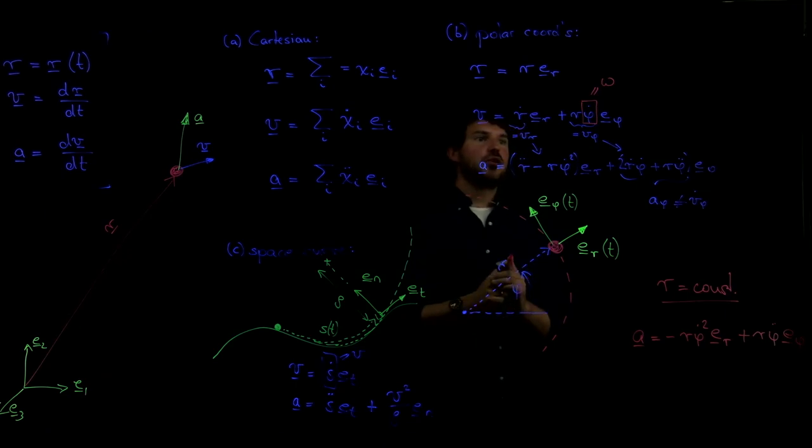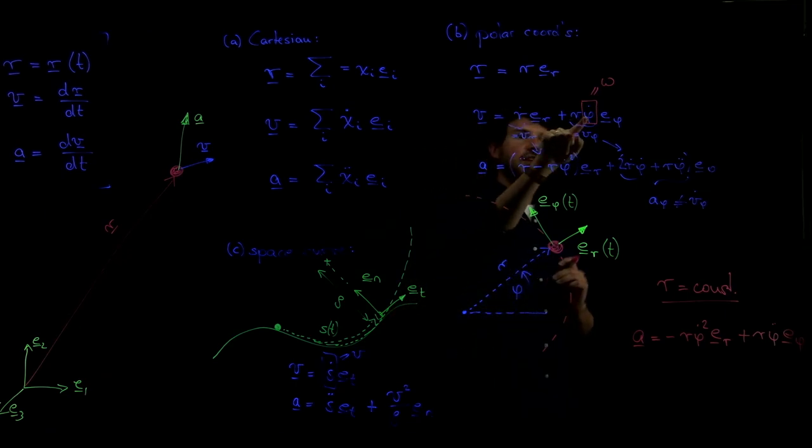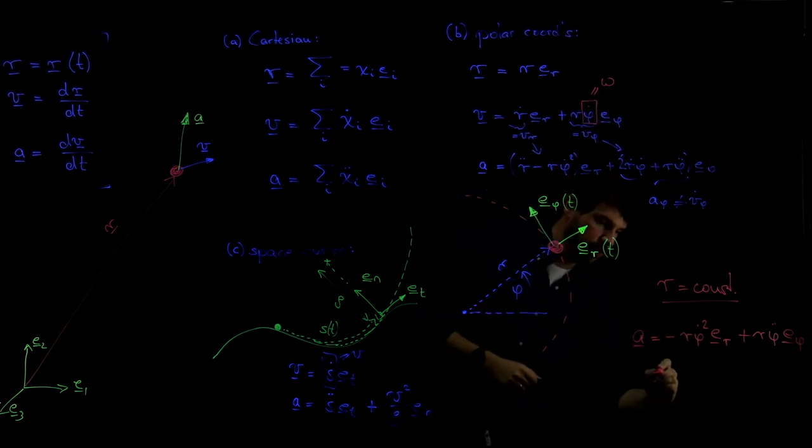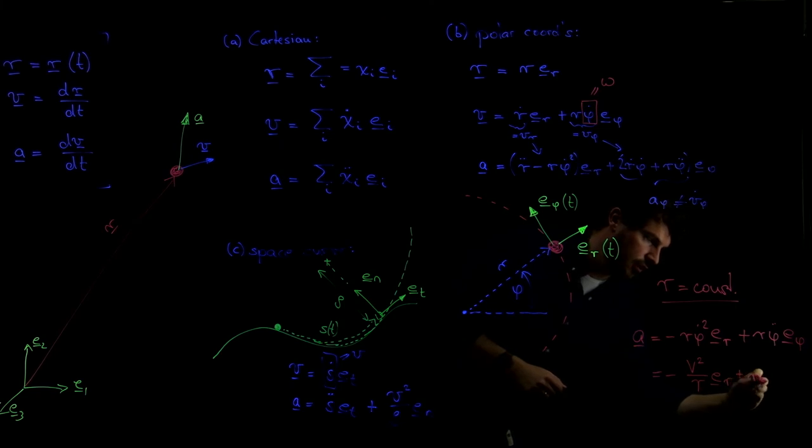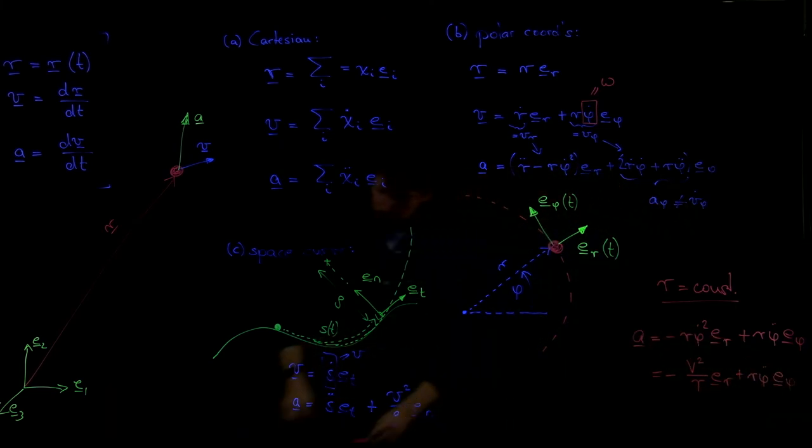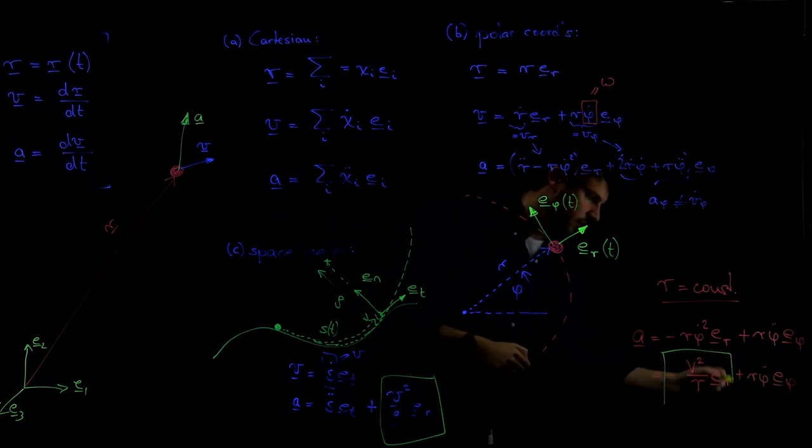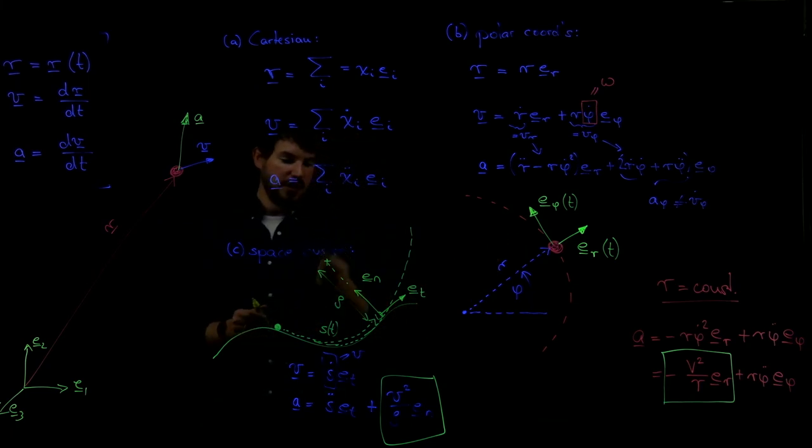And if I now do the simple trick of noticing that r times phi dot up here is the velocity along the path. That means I can also rewrite this as minus v squared over r times e r plus r phi double dot e phi. If we now compare these two, what we notice is this term here. It's pretty much analogous to that one.